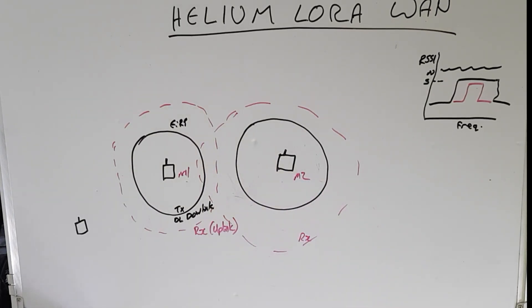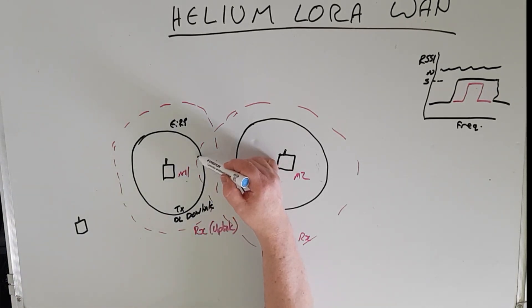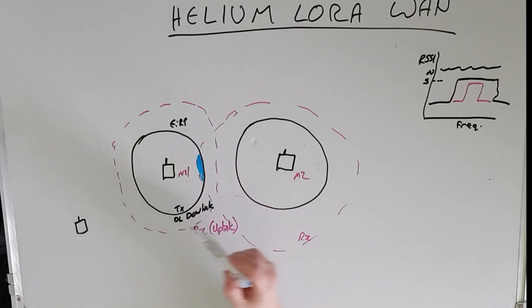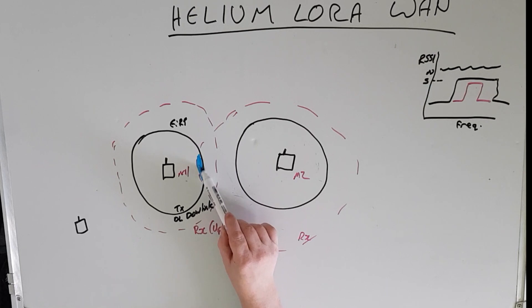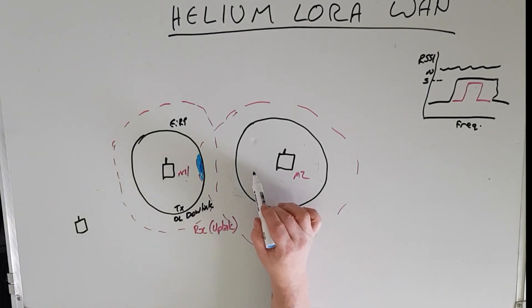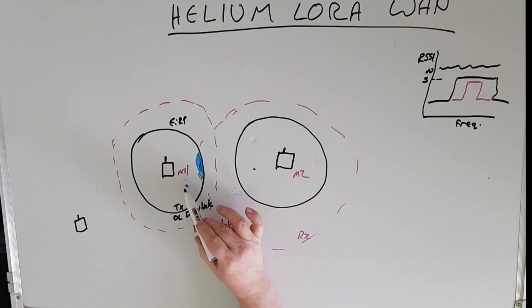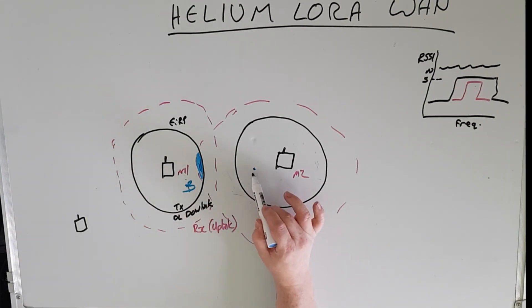Well in this instance we can see there's an element of overlapping coverage. We can see in this area that miner number one's transmit coverage for its beacon overlaps miner number two's receiving coverage. So as a result, miner number two is a witness to miner number one's beacon. So he sends out a beacon and he's a witness to it.